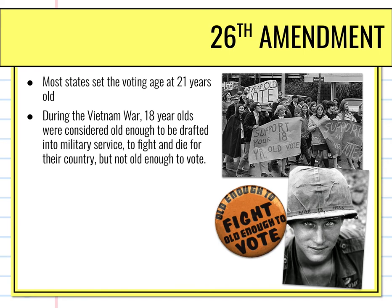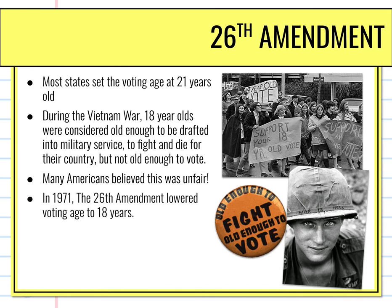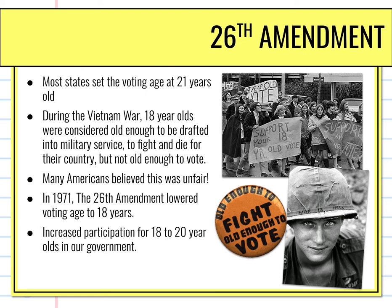During the Vietnam War, 18-year-olds were considered old enough to be drafted into military service. They could fight and die for their country, but they were not old enough to vote for the people who sent them to this war. Most Americans felt that this was unfair, and in 1971, the 26th Amendment officially lowered the voting age from 21 to 18. It also helped to increase voter participation for the bracket of 18 to 20-year-olds.